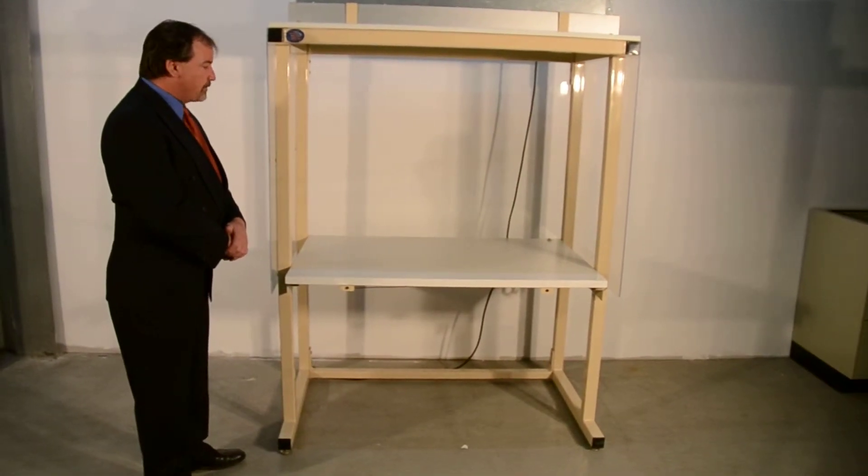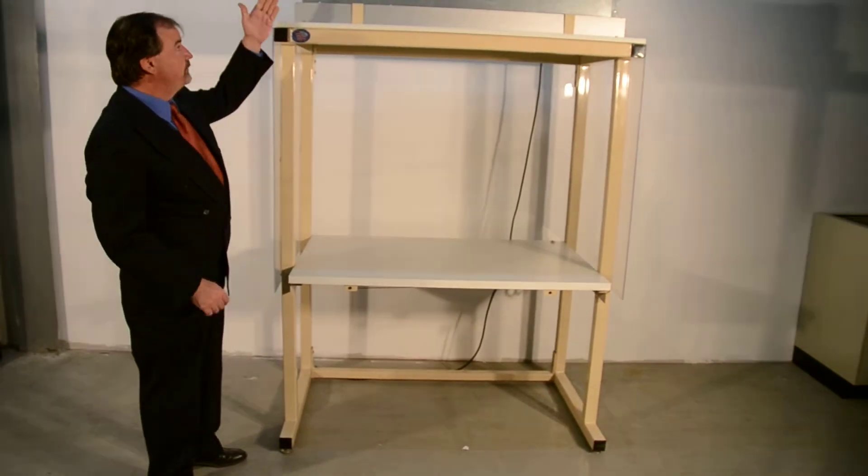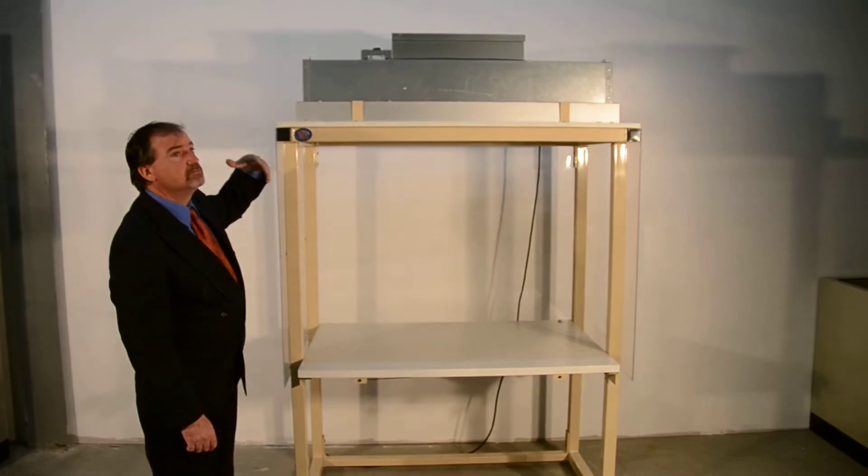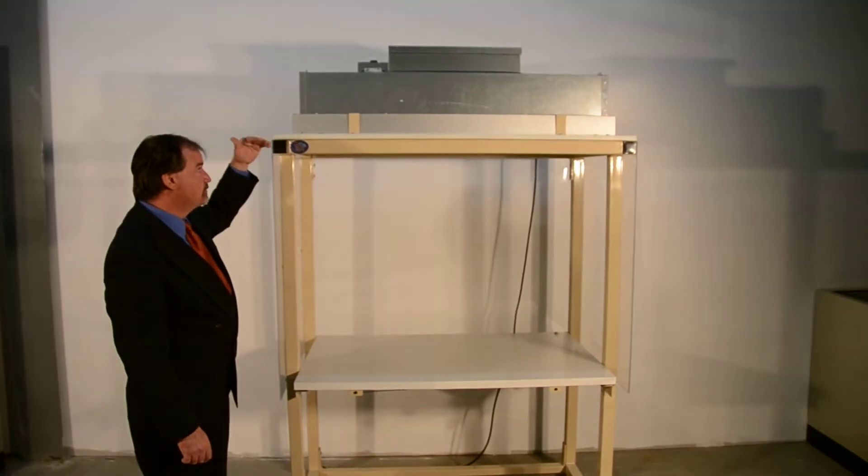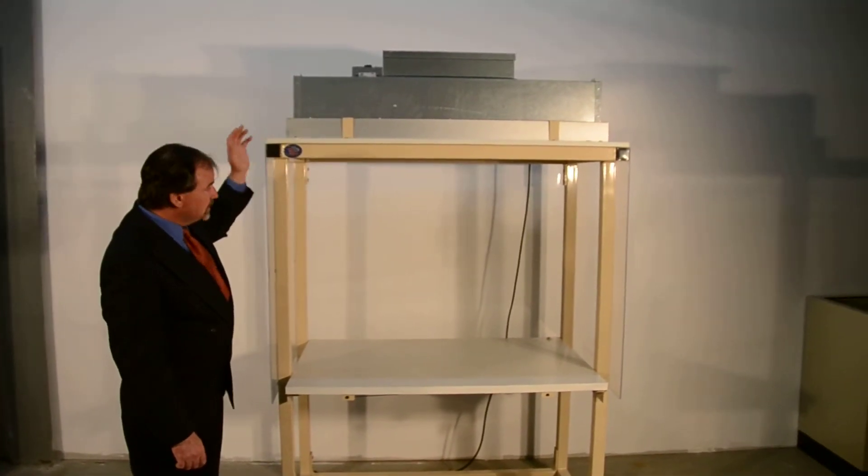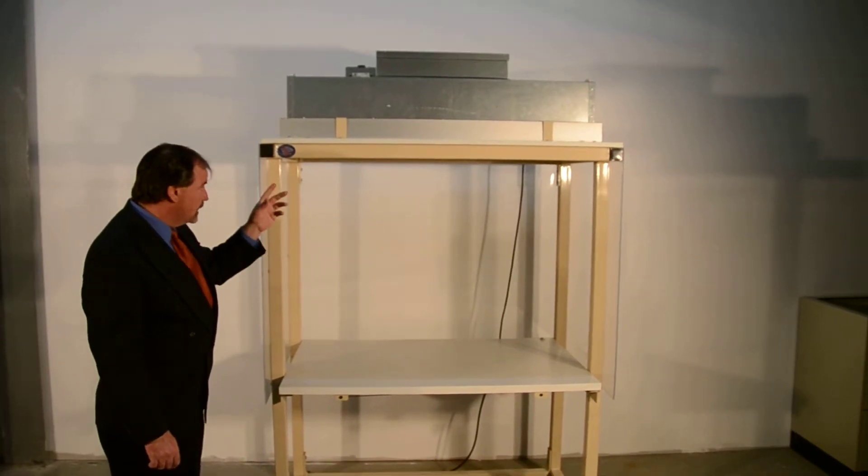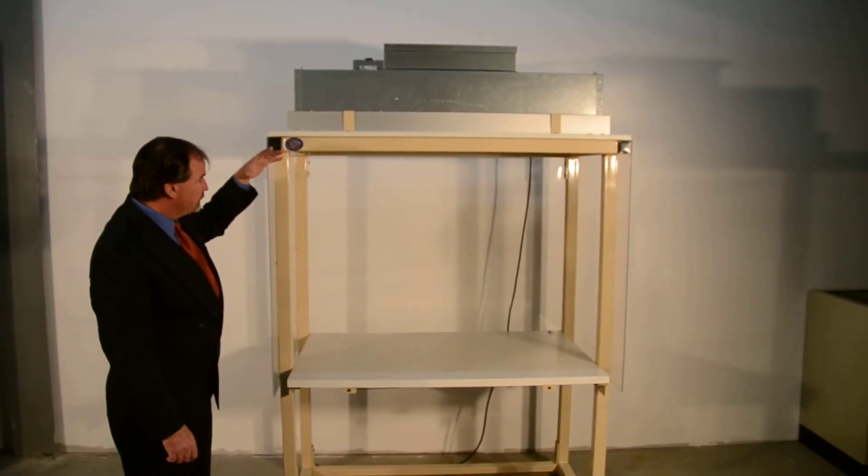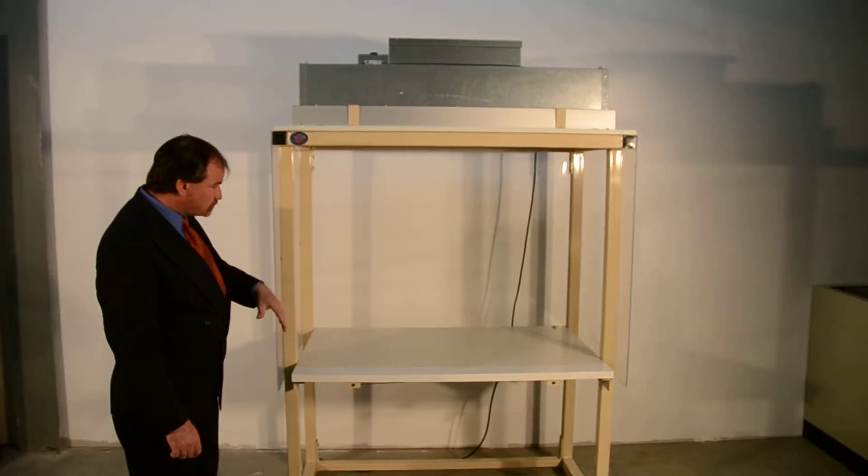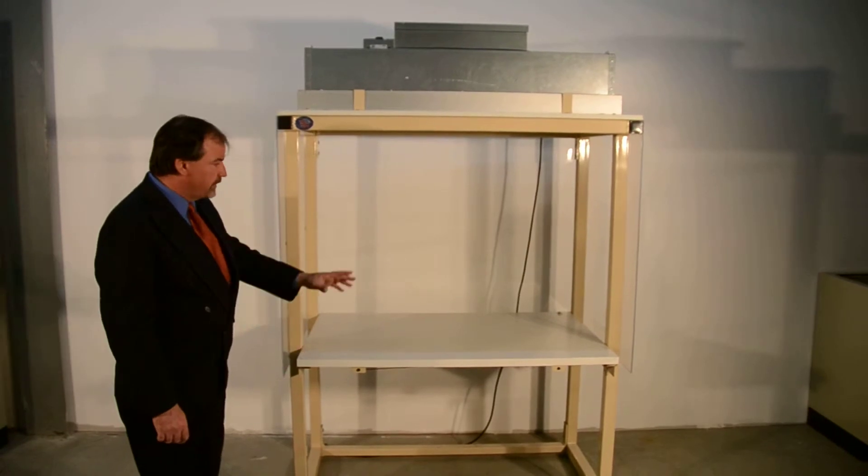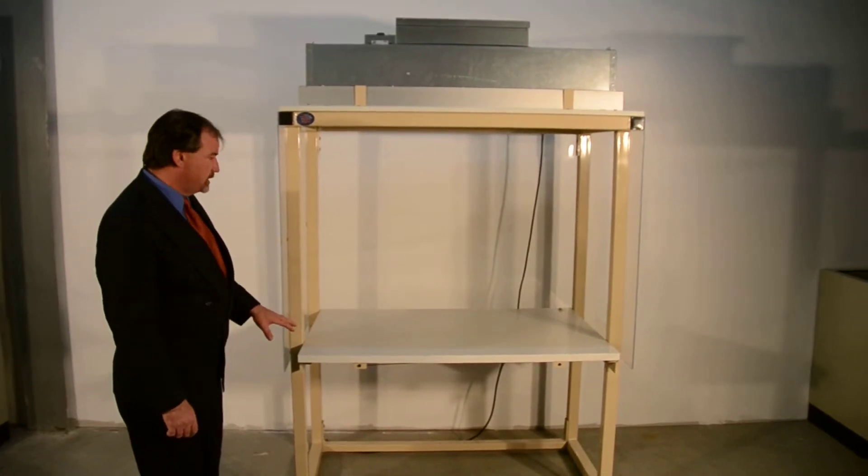The way this unit operates is we have a pre-filter, then we have a fan that draws particles from the air into the HEPA filter, and then it's 99.9% clean by the time it comes out of the HEPA filter. A flow of air runs down, and it pushes out of the work surface area that's enclosed in three sides with plexiglass.